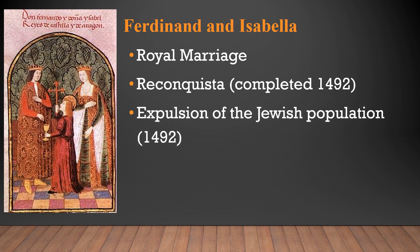After the surrender of Granada, Ferdinand and Isabella expelled the Jewish population as well. A minimum of about 165,000 Jews were expelled. Another 50,000 or so were baptized, and many of the Jews fled to Turkey, North Africa, and a good portion fled into modern-day Poland during this time period.